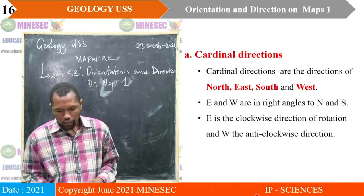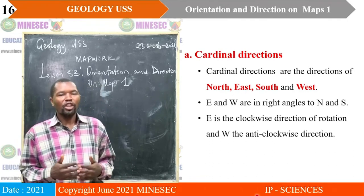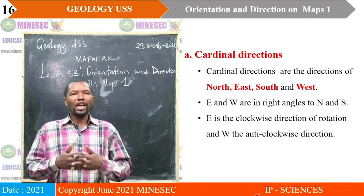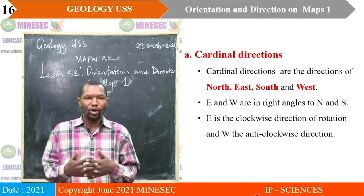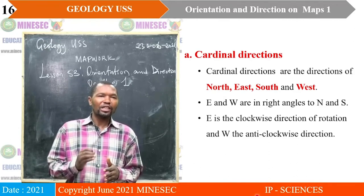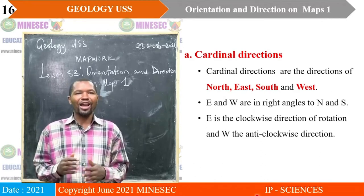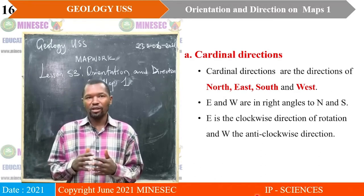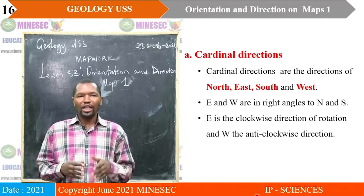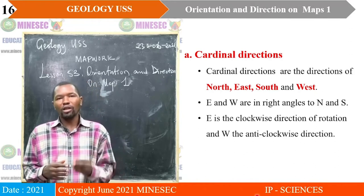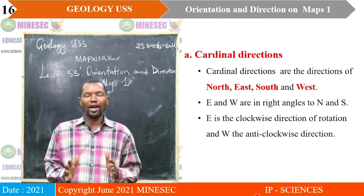Cardinal directions on maps are the directions of the north, the east, the south, and the west. Note should be taken that in cardinal directions, the east and the west are at right angles to the north and the south. Also, the east is the clockwise direction of rotation, while the west is the anticlockwise direction.